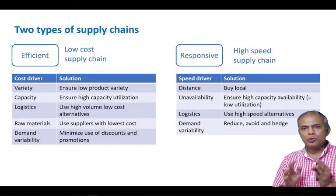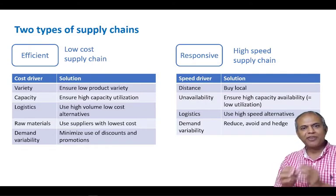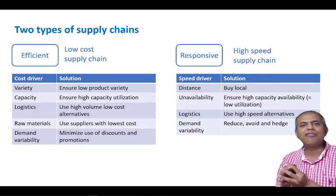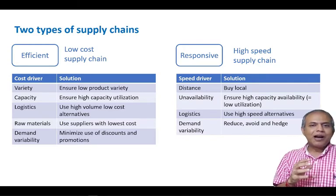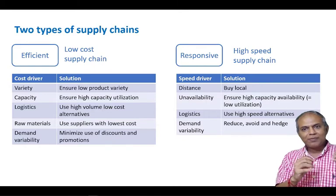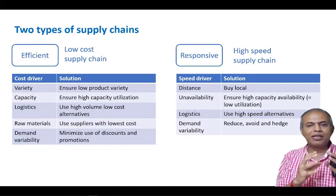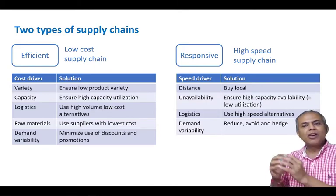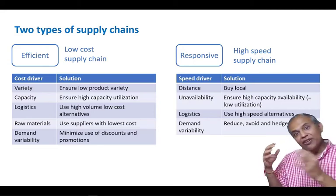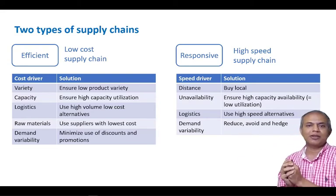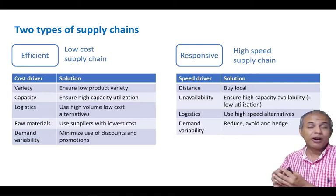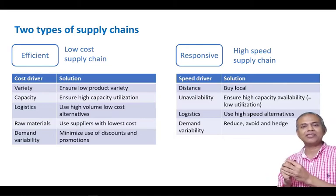We have defined two types of products: functional products and innovative products. Functional products have low margins, while innovative products have higher margins. Functional products are more affected by physical function cost — change of cost affects their profitability a lot more. Change of availability or customer service affects innovative products a lot more, so innovative products are more affected by market mediation cost.